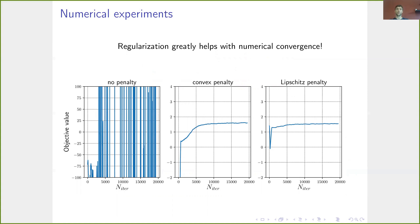And this isn't just a theoretical justification for the approximation by neural networks, but it also really helps numerically. So here we see three graphs showing the objective value during the training of parameters for the neural networks. Without penalization, without a penalty, we saw that it doesn't converge at all. And using this convex or Lipschitz penalty, we see that it converges very nicely.